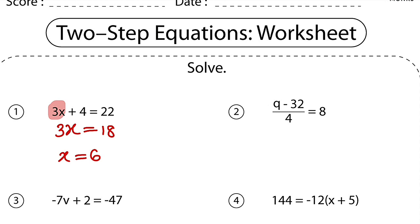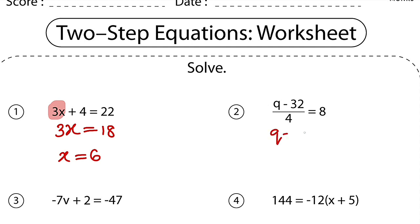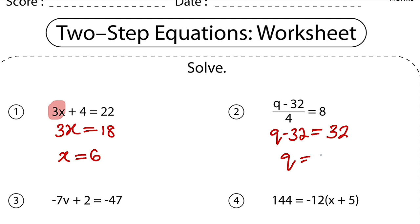Moving on to question number 2. We have a number to the top. You should group them together. You should ask yourself, what number can you divide by 4 to get 8? It is only 32 you can divide by 4 to get 8. So you set the whole of q minus 32 to be equal to 32. Ask yourself, what number can you subtract 32 from to get 32? It is only if that number is 64, because 64 minus 32 is equal to 32.